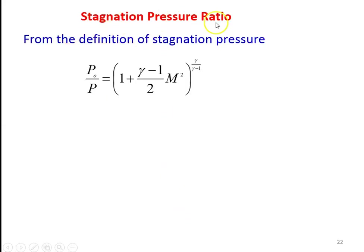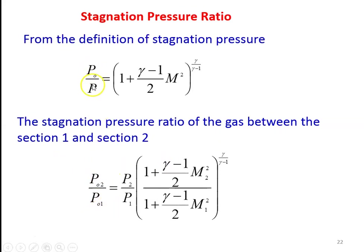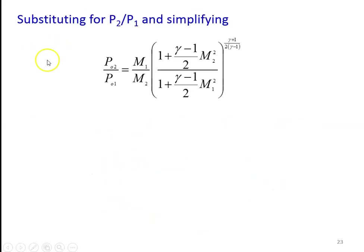The next property ratio is stagnation pressure ratio. From the definition of stagnation pressure, P₀/P = [1 + (γ−1)/2 × M²]^(γ/(γ−1)). For the stagnation pressure ratio between section 1 and section 2, P₀₂/P₀₁, we apply this equation for both the final and initial states. Substituting P2/P1 and simplifying, P₀₂/P₀₁ = (M1/M2) × [(1 + (γ−1)/2 × M2²) / (1 + (γ−1)/2 × M1²)]^((γ+1)/(2(γ−1))).